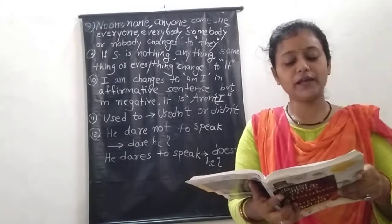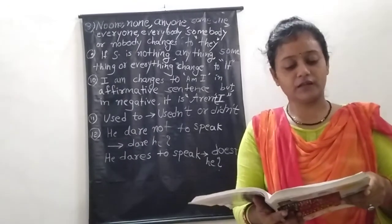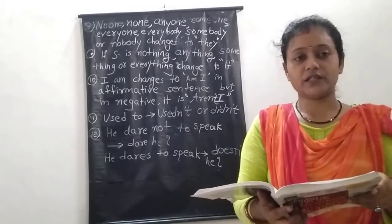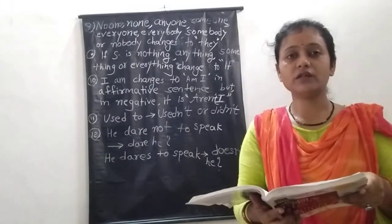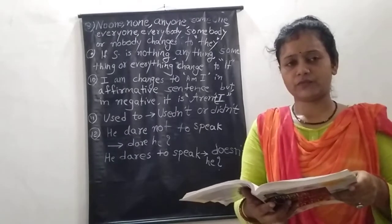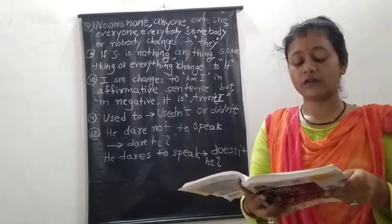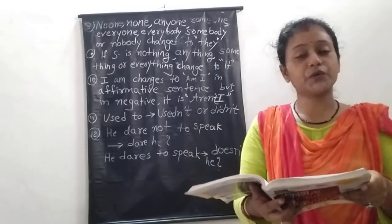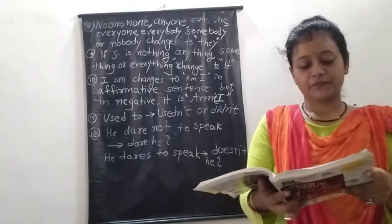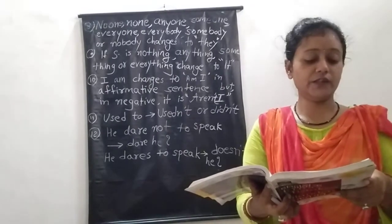Next example: 'One man can pull it.' Since 'one' is used as an adjective here, it will change to 'he', so the question tag will be 'can't he'. Example: 'None can say so.' According to Rule 8, the subject changes to 'they', so the question tag is 'can they'. 'Everything is arranged' — 'everything' changes to 'it', so the question tag is 'isn't it'.